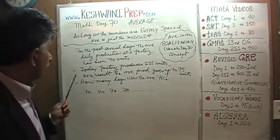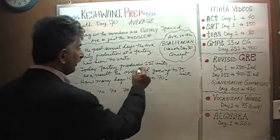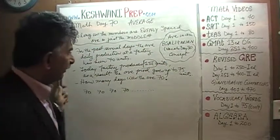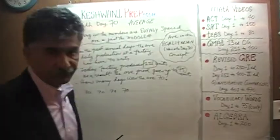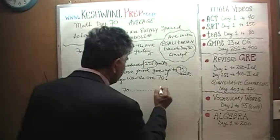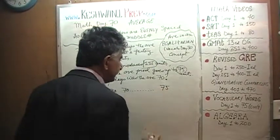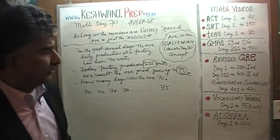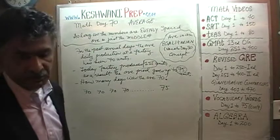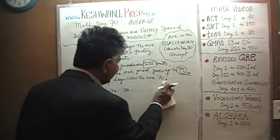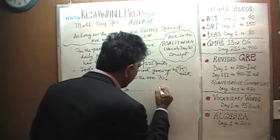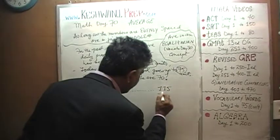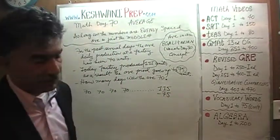Today, however, is different. Today we produce — we are told — 115 units. And as a result, the average has shot up to 75 units. To keep our life simple, we are going to pretend that we produce 75 units today. But of course we did not produce 75 units — we produced 115 units. So we take our 115 units that we actually produced and subtract from it the new average. The new average is 75.